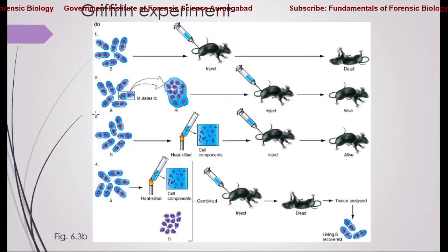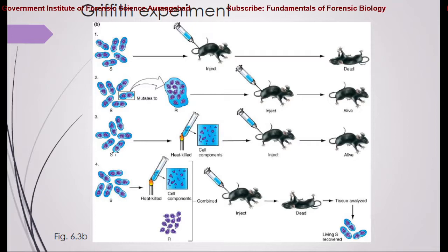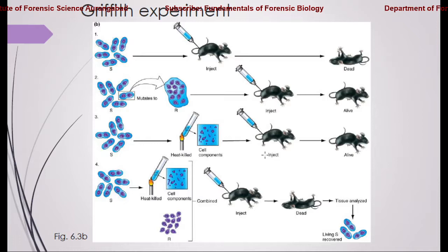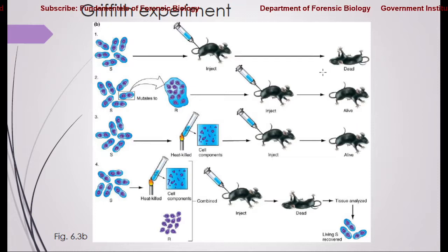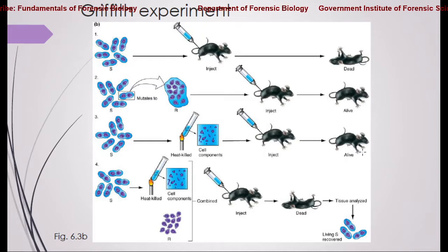In his third experiment, he took the S strain and heat-killed it, leading to the formation of cellular debris. He collected all these components and injected them into mice. Because of the heat treatment, the cells lacked the components that cause infection, and thus the mice remained alive. In the first set, the live S strain killed the mice; in the third set, the heat-killed S strain did not.